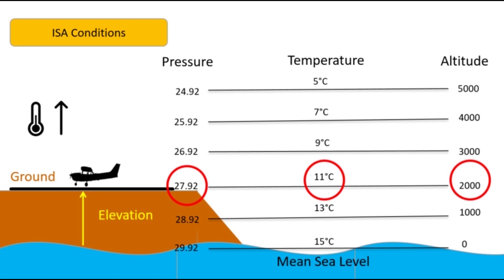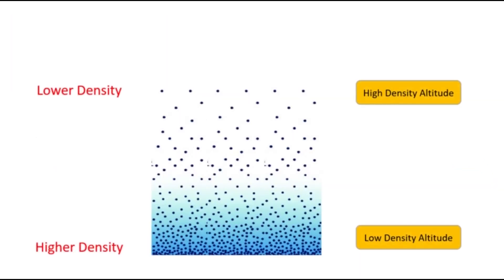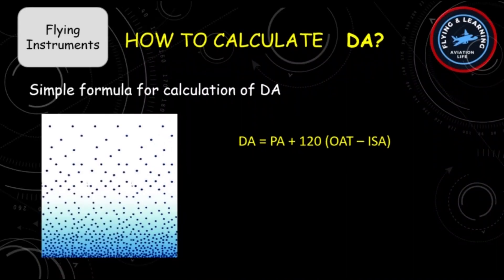If the outside temperature increases, pressure will further reduce and density will decrease, causing density altitude to increase. This will affect aircraft performance as if the aircraft is flying above 2,000 feet. The opposite happens if the outside temperature is lower than the standard temperature — density altitude decreases and aircraft performance increases. For understanding: once the density is higher, the density altitude is lower; and if the density altitude is higher, then the air density is lower.